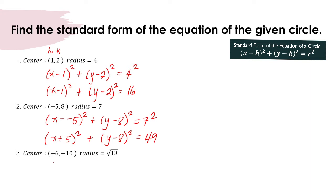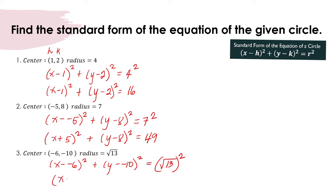For number 3, this gives x minus negative 6 squared plus y minus negative 10 squared, is equal to the square root of 13, squared. Simplifying the inner terms, that would be x plus 6 squared plus y plus 10 squared is equal to 13.